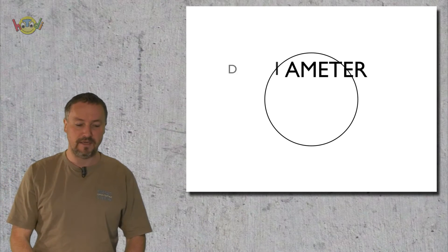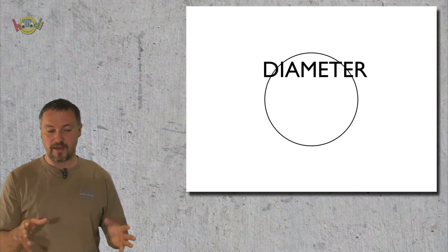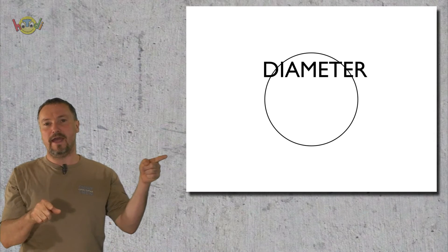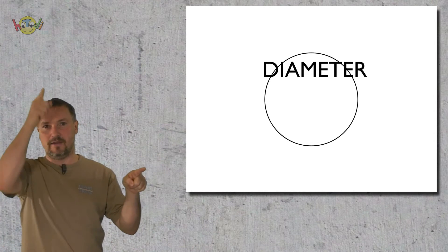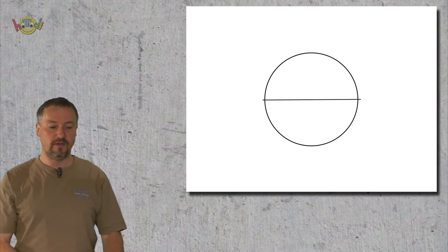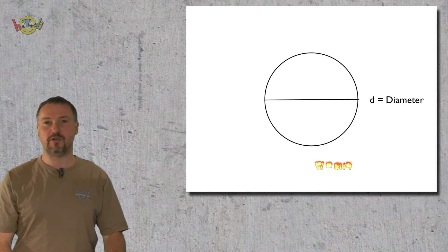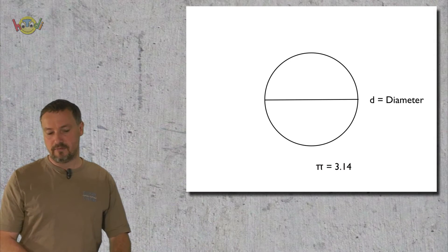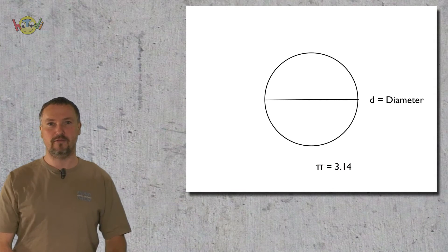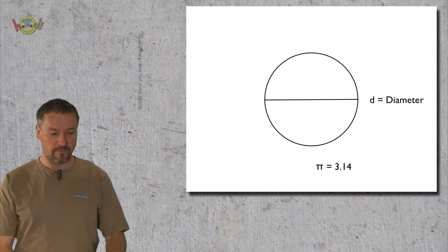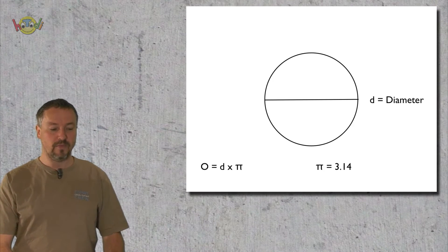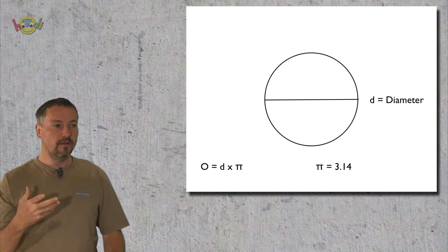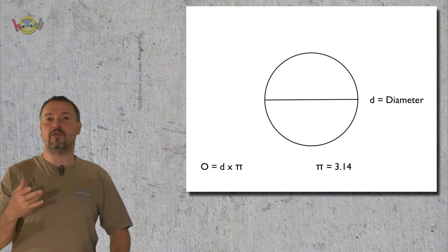What we need now is the diameter. The diameter is the line from one edge to the other edge, exactly through the middle. You can see this line — that is the diameter. The next thing we need is the number we talked about: Pi, 3.14.